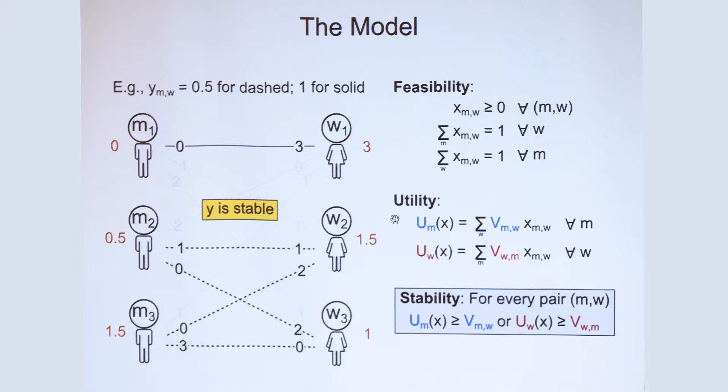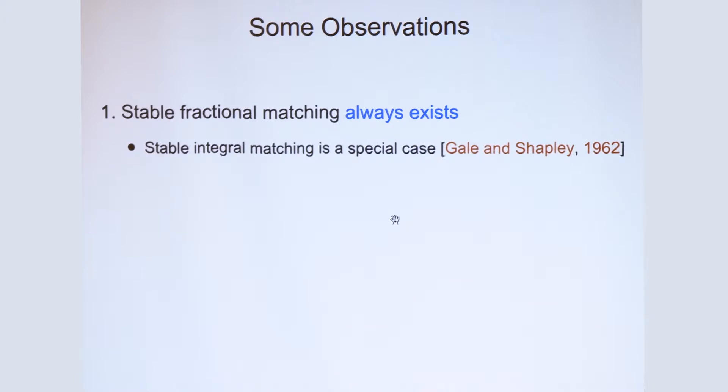I want to remark that this definition of stability is not new to our work. It has been studied before, especially in the economics literature. What is new is some of the computational questions that I'm going to talk about soon. But before I get into that, let me make a couple of observations. So first of all, a stable fractional matching in the sense that I just described always exists. And the simple reason is that this model is a generalization of the Gale-Shapley model, and so we get the existence result for free.